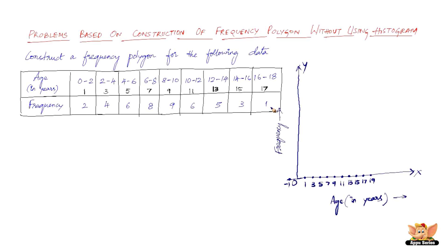The highest frequency is 9 and the least is 1, so let's count 1 to 10 on the y-axis: 1, 2, 3, 4, 5, 6, 7, 8, 9, and 10. Now let us plot the points.